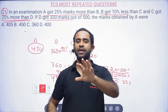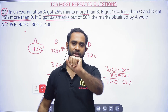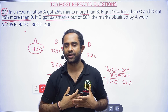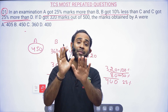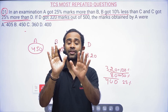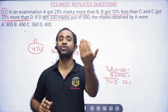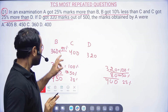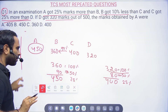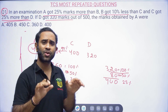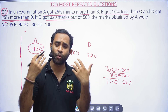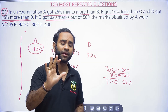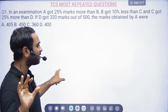If you have 400 rupees and someone asks for 50%, you give 200 — whatever you have becomes 100%. These problems are very easy if you avoid using a calculator, which only wastes time. The solution should be as simple as the question.